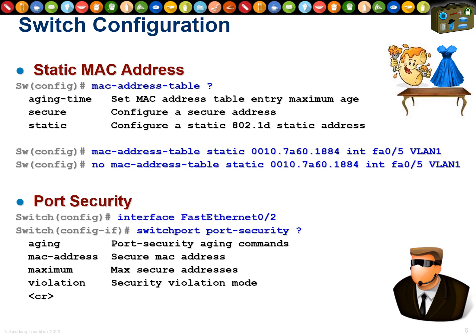Go into interface mode and type 'switchport port-security'. Note that 'switchport' is a layer 2 command, so everything after it affects layer 2 functionality. The options include aging, MAC address, maximum, violation, and CR — which means carriage return, or just press enter. So 'switchport port-security' on its own is a valid command; just press enter and you're good to go.